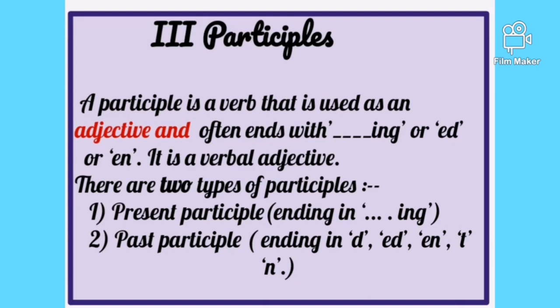Now the third kind of non-finite verb: participles. Participles are verbs used as adjectives, and they often end with 'ing,' 'ed,' 'en,' 't,' 'n,' or 'd.' Because they are used as adjectives, we call them verbal adjectives — made from a verb but acting as an adjective. There are two types: present participle and past participle.